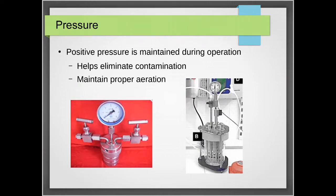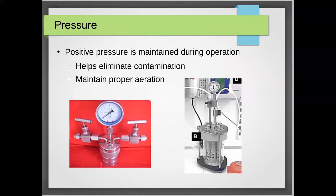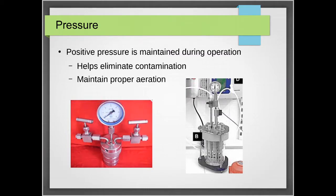You also need to consider and maintain pressure in your fermentor. Positive pressure is desired inside a reactor because it helps eliminate contamination — if there is a leak, the positive pressure pushes contents outward rather than allowing contaminants to enter. Control of pressure is very significant, especially if you are maintaining consistent aeration. Remember that pressure is also important for the solubility of gases: at higher pressure, oxygen and other gases, including carbon dioxide, are more soluble.